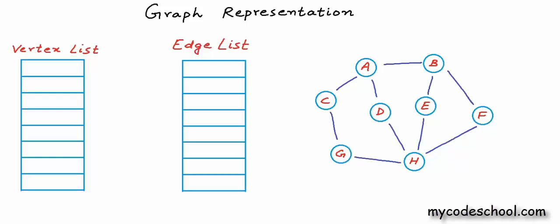A vertex is identified by its name. So the first list — the list of vertices — would simply be a list of names or strings. I've just filled in names of all the vertices for this example graph here.